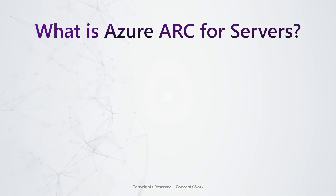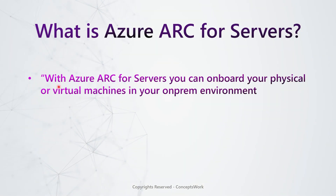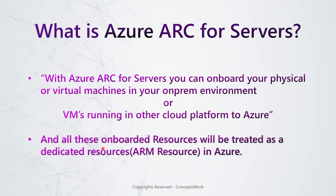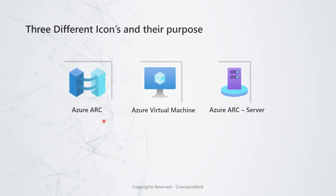To begin with, let's understand what Azure Arc for Servers is from a definition perspective. With Azure Arc for Servers you can onboard your physical or virtual machines in your on-prem environment, or VMs running in other cloud platforms, to Azure. All these onboarded resources will be treated as a dedicated Azure resource — which typically means an ARM resource — meaning every resource will have a resource ID, you can group them into resource groups, and use the basic constructs of Azure.